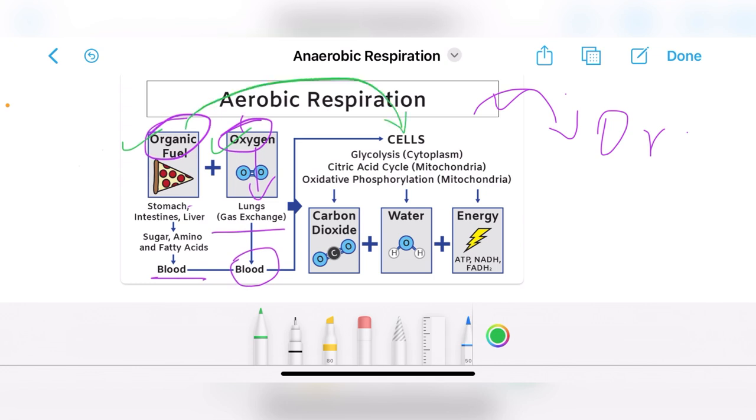This food and oxygen then reaches to the level of cell, and inside the cell a reaction occurs in between oxygen and food, that is mostly glucose, because glucose or carbohydrates is our primary or main source of energy. So mostly jo humari body hoti hai, wo glucose ko hi utilize karti hai as a main source of energy.